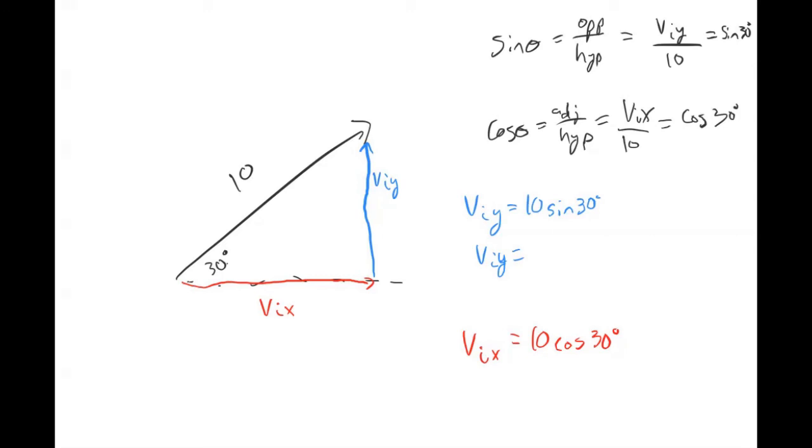This would give you an initial y component of your velocity as 5 meters per second, and that would all be in the y direction. And then your x component would be 8.66 meters per second and that's all in the i hat direction.